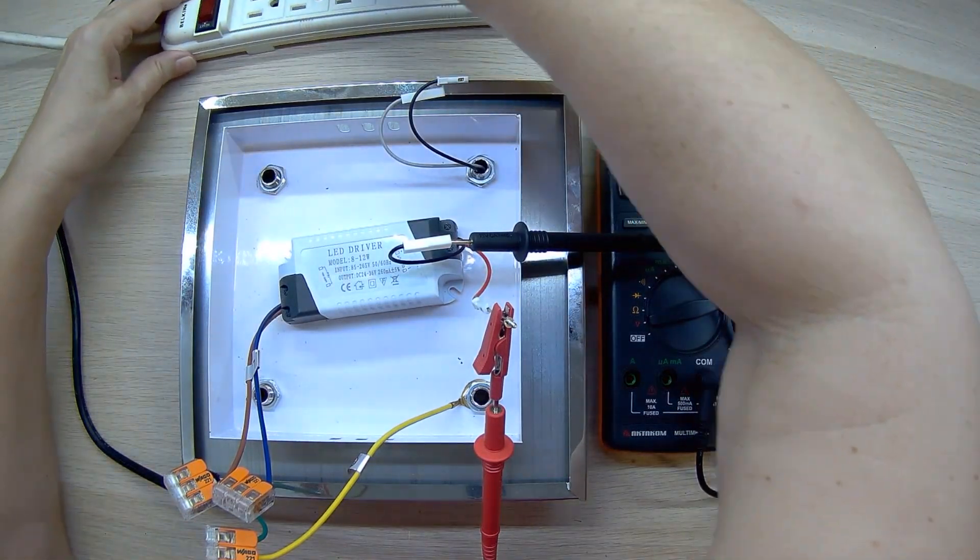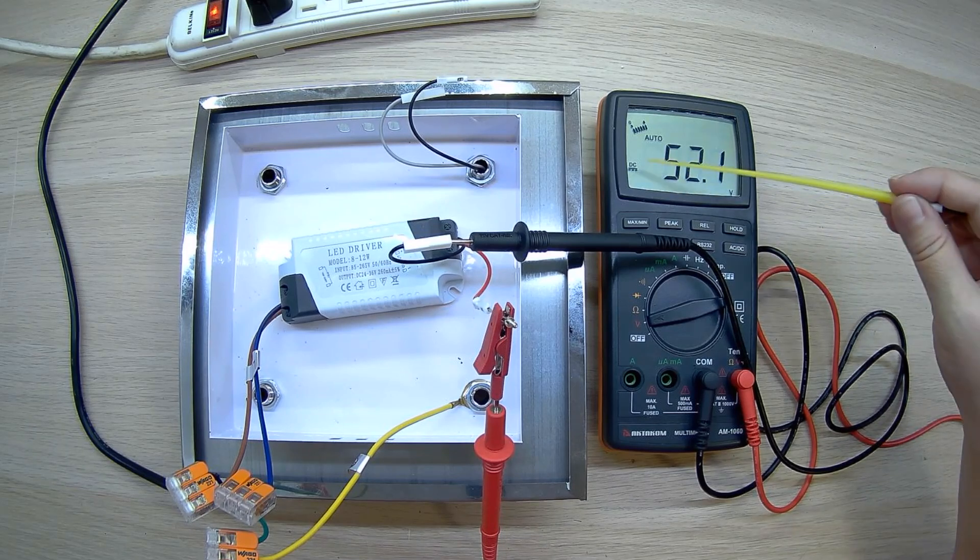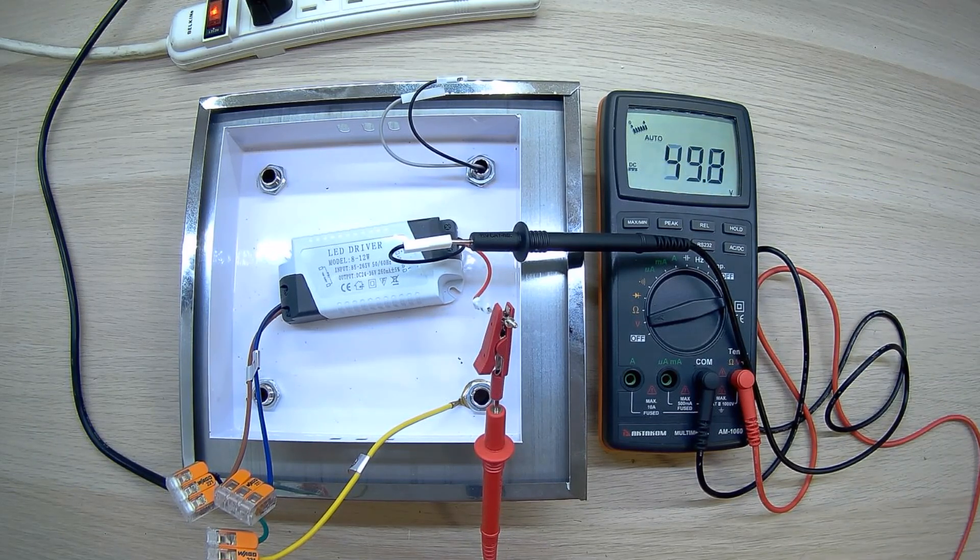Turn on the mains voltage and we see the presence of output voltage at the driver output, therefore the driver is working. We need to look for a fault in the LED strip.